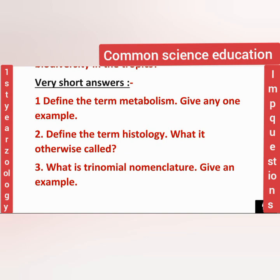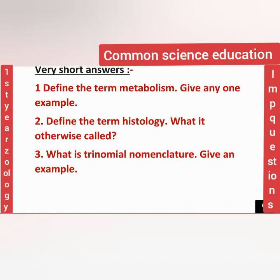For very short answers, according to the blueprint, you can easily get eight marks - eight questions. From Unit 1 - Diversity of Living World, Structural Organization, Animal Diversity 1, and Biology and Human Welfare, these four lessons - from ten questions, eight questions can be covered there.